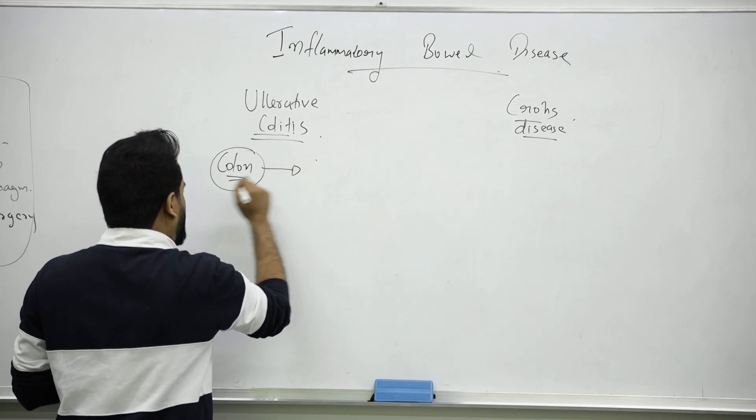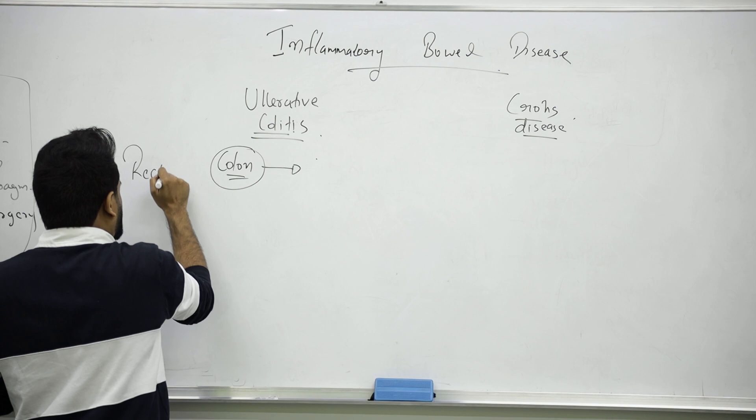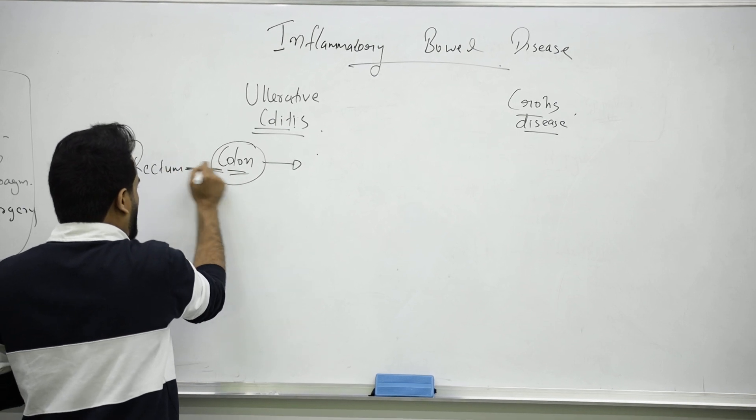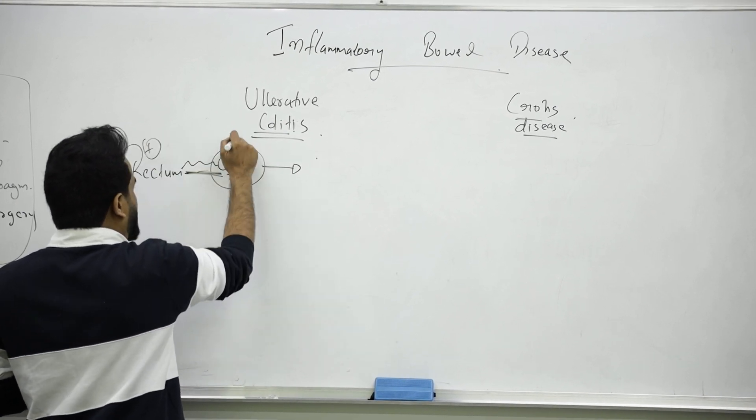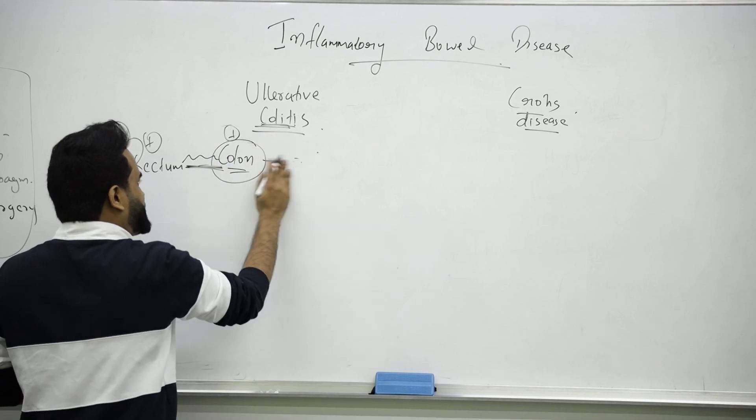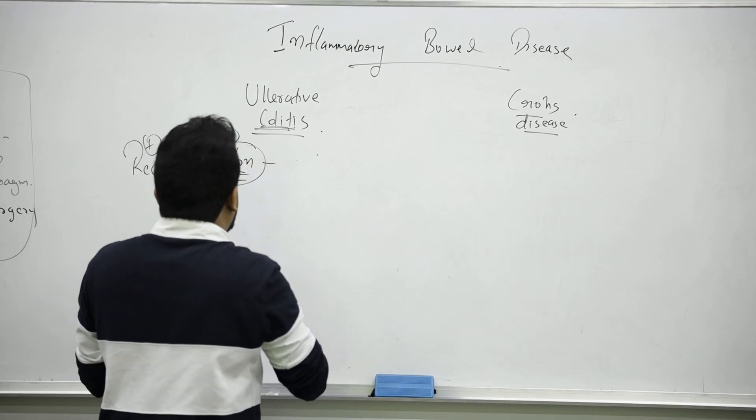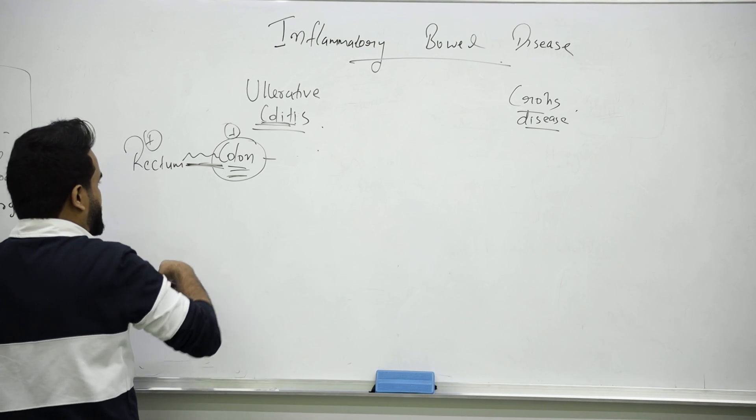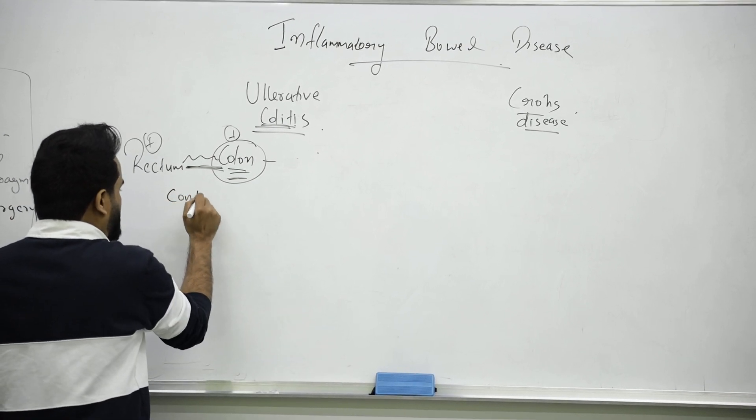It is an inflammation in the colon as well as the rectum. This area - rectum and colon - mainly these two organs are affected, mainly colitis. It will be a continuous lesion - no skipping, continuous inflammation.